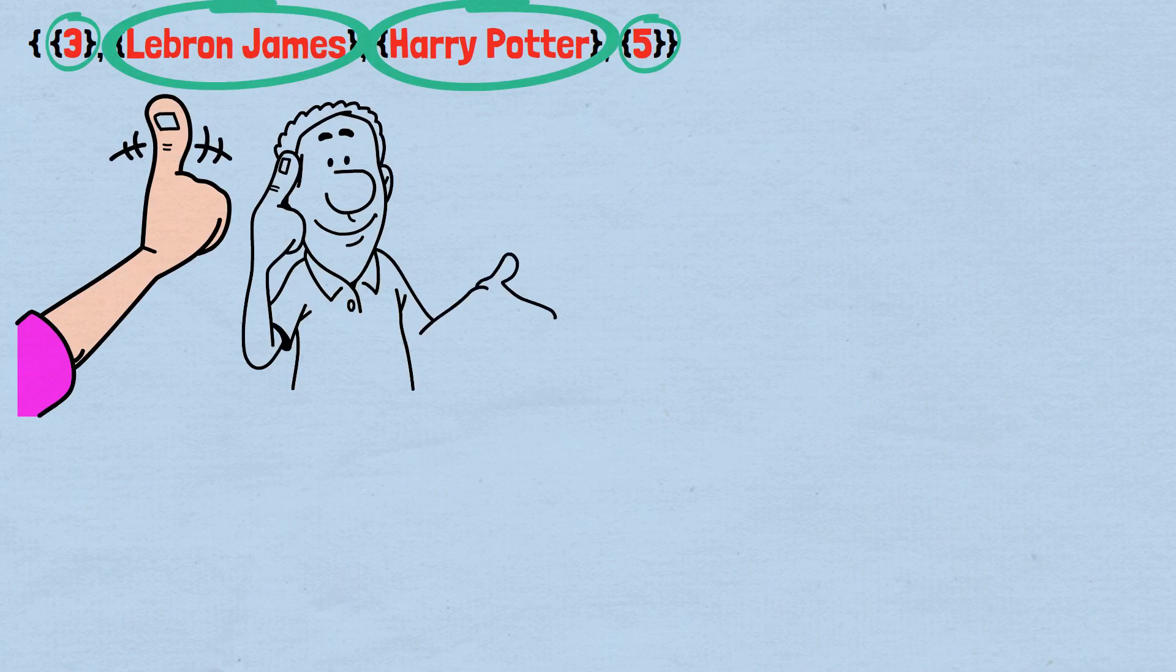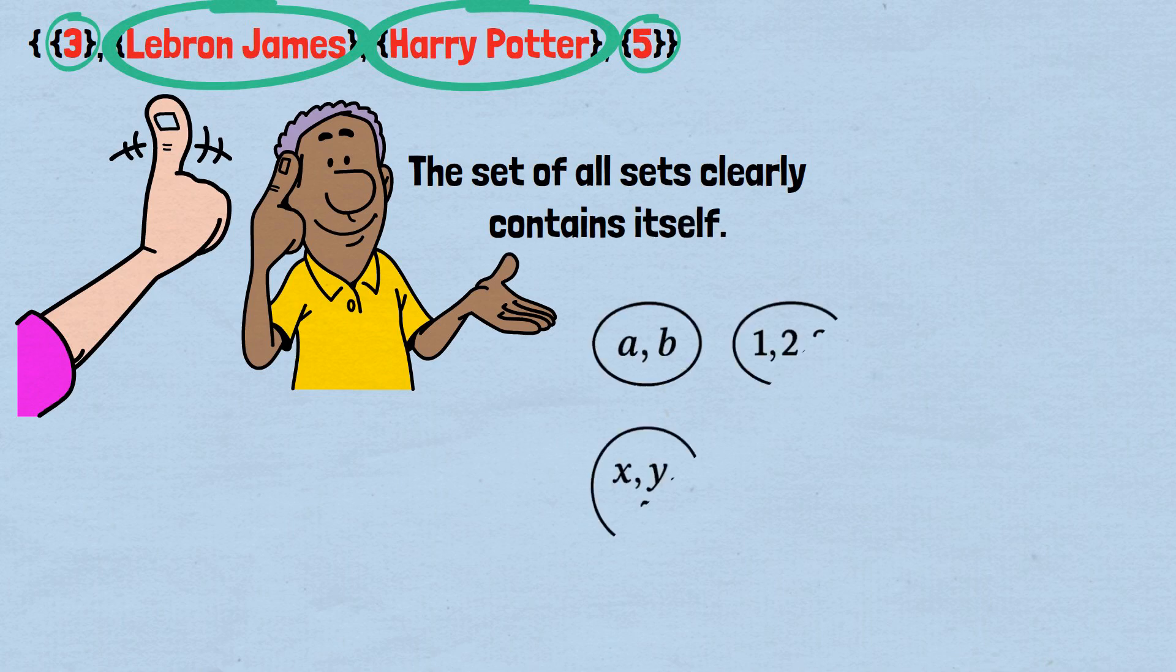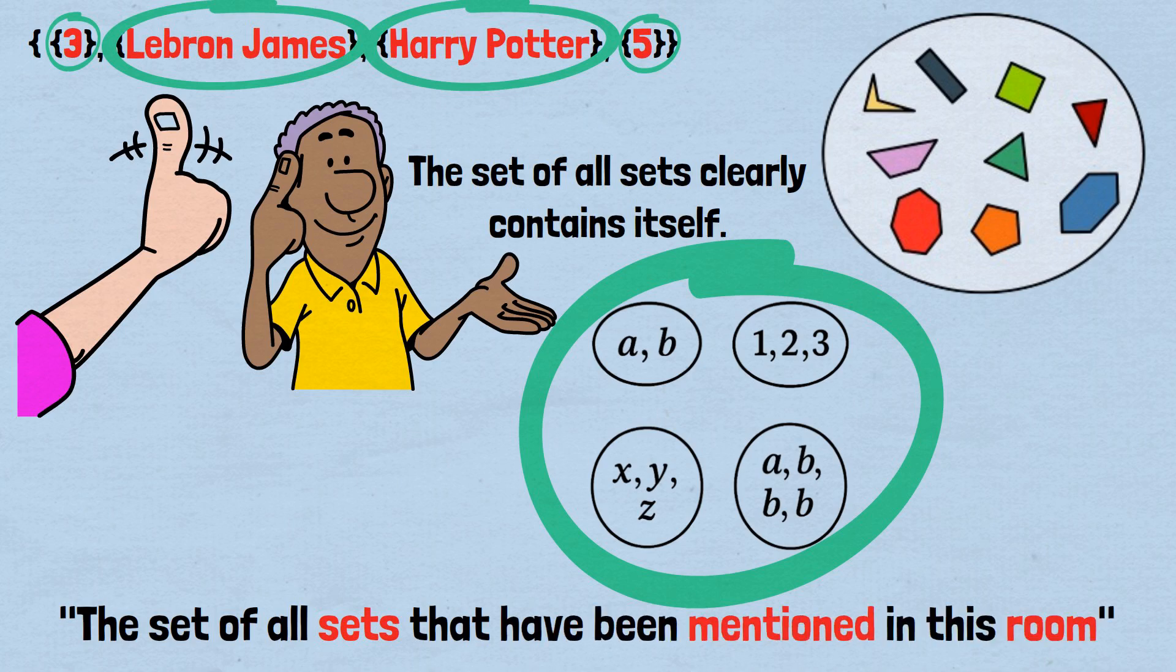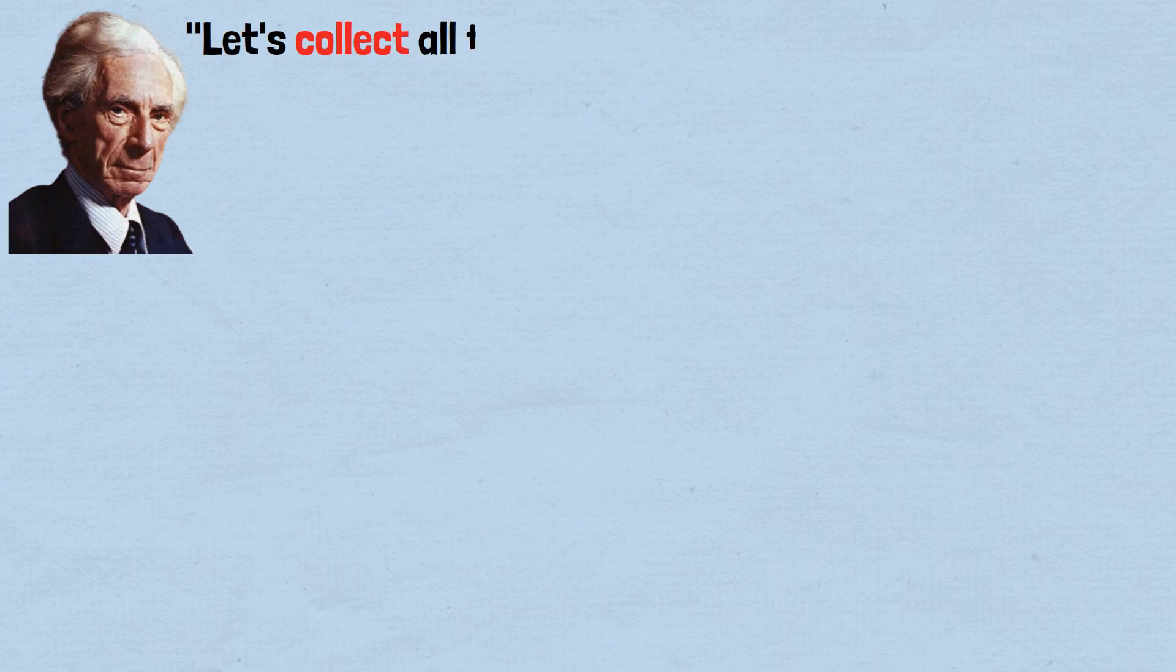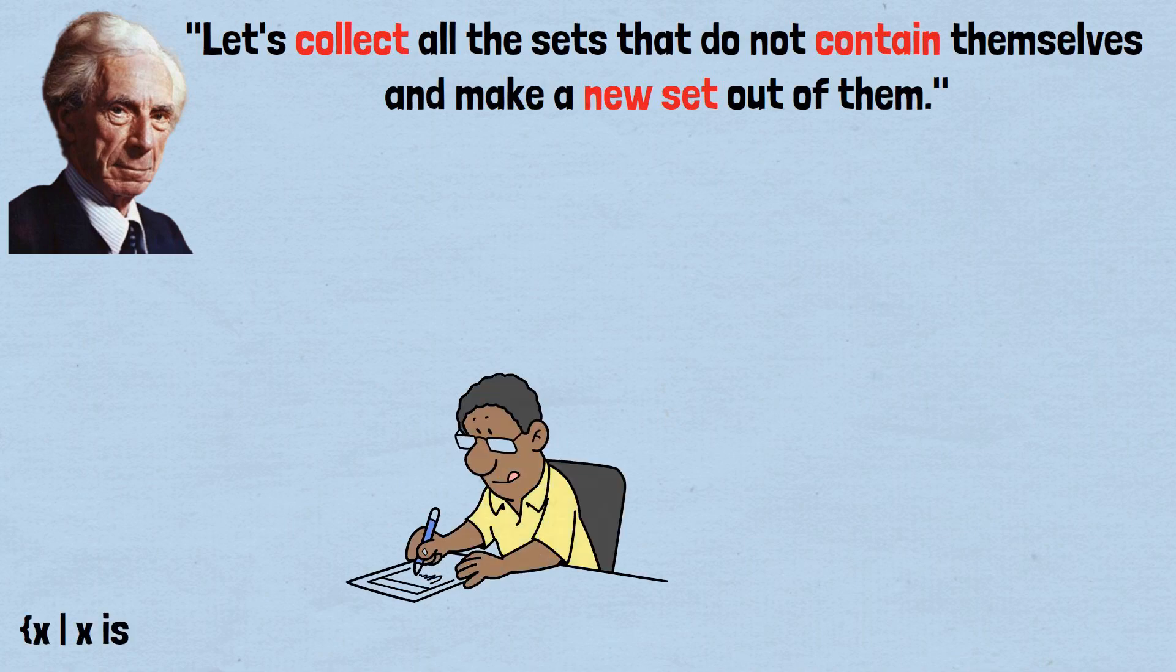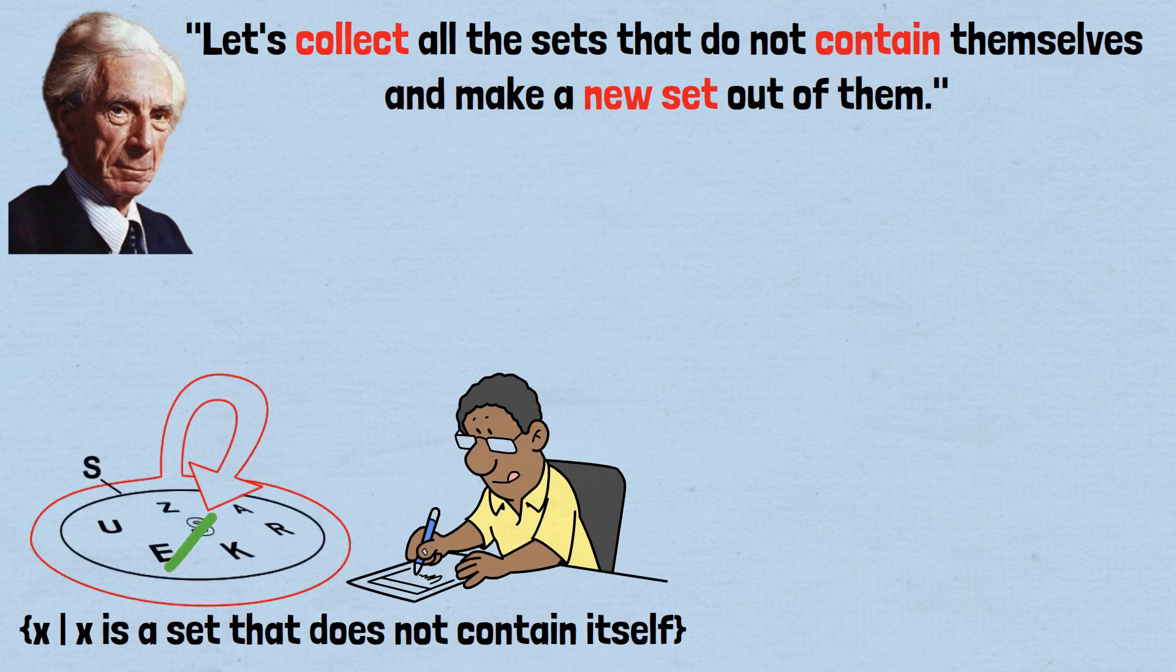Now let's consider sets that do contain themselves. The set of all sets clearly contains itself. The set of all non-singleton sets contains itself because it has many members, making it a non-singleton set. The set of all sets that have been mentioned in this room, once I mention this set, it contains itself. Here's where Russell's insight occurs. He thought, let's collect all the sets that do not contain themselves and make a new set out of them. We'd write this as {X | X is a set that does not contain itself}. The set of all sets that do not contain themselves.